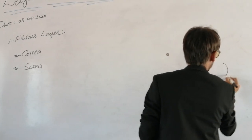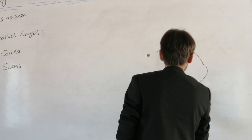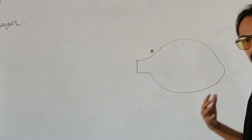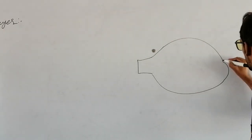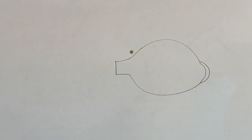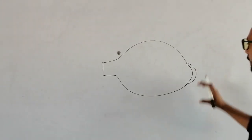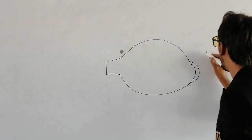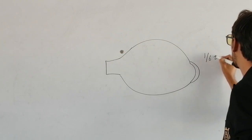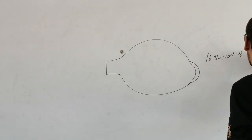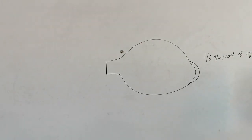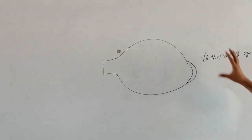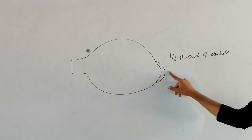If I draw a structure of the eyeball, this is a temporal view of the eyeball. The anterior-most structure, which is transparent, is called the cornea. The cornea consists of one-sixth part of the eyeball — if you divide the whole eyeball into six different parts, one part is the cornea.